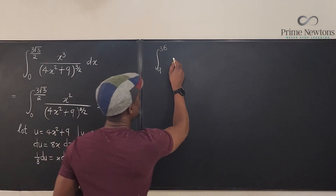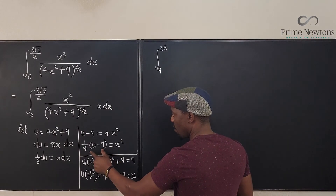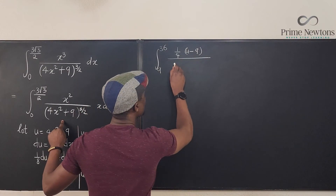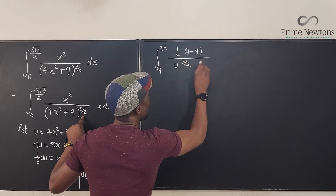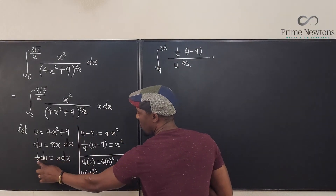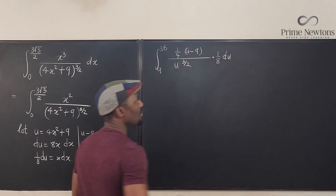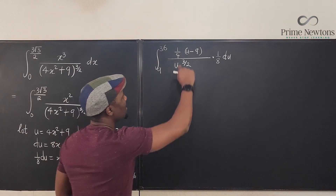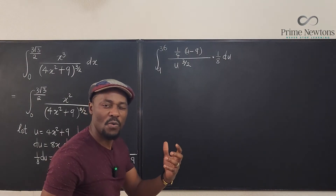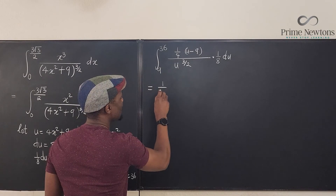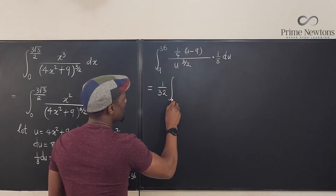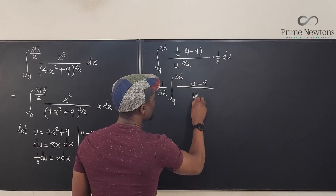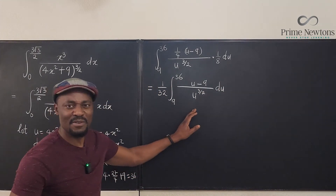Let's write everything we've got. On top, x² is replaced by (1/4)(u − 9); underneath we have u raised to 3/2; and x dx is replaced by (1/8) du. Taking out all the scalar constants: (1/4) × (1/8) = 1/32. So we pull that out front and the integral becomes (1/32) times the integral from 9 to 36 of (u − 9) / u^(3/2) du.